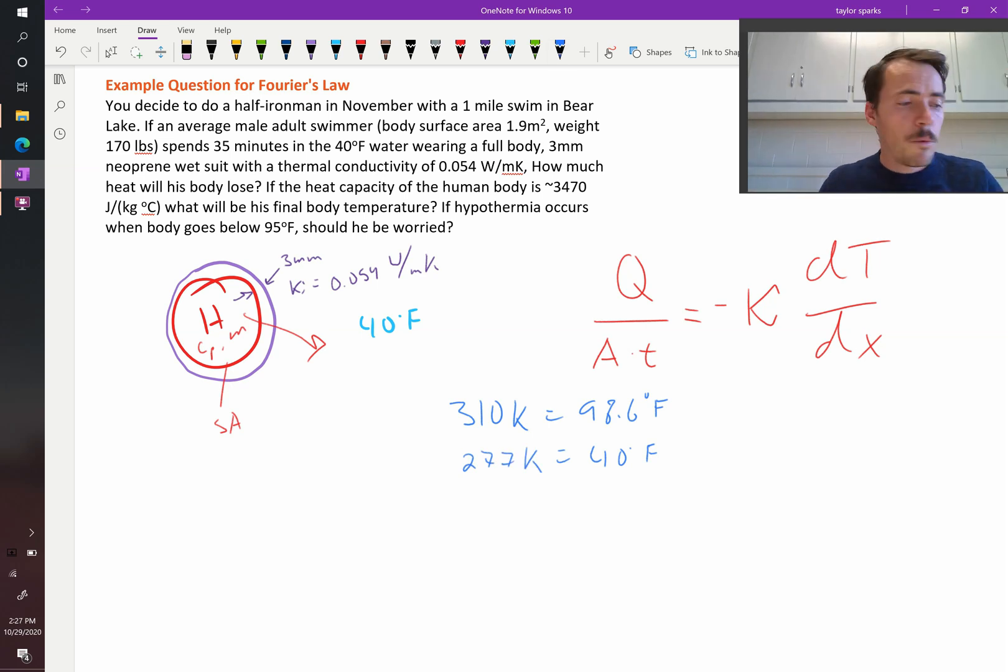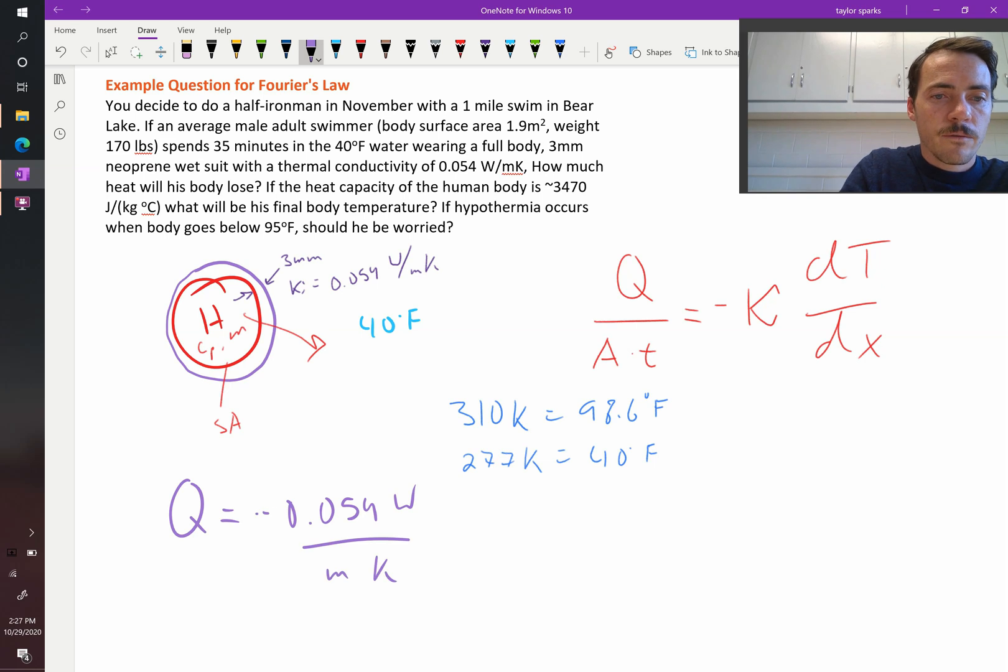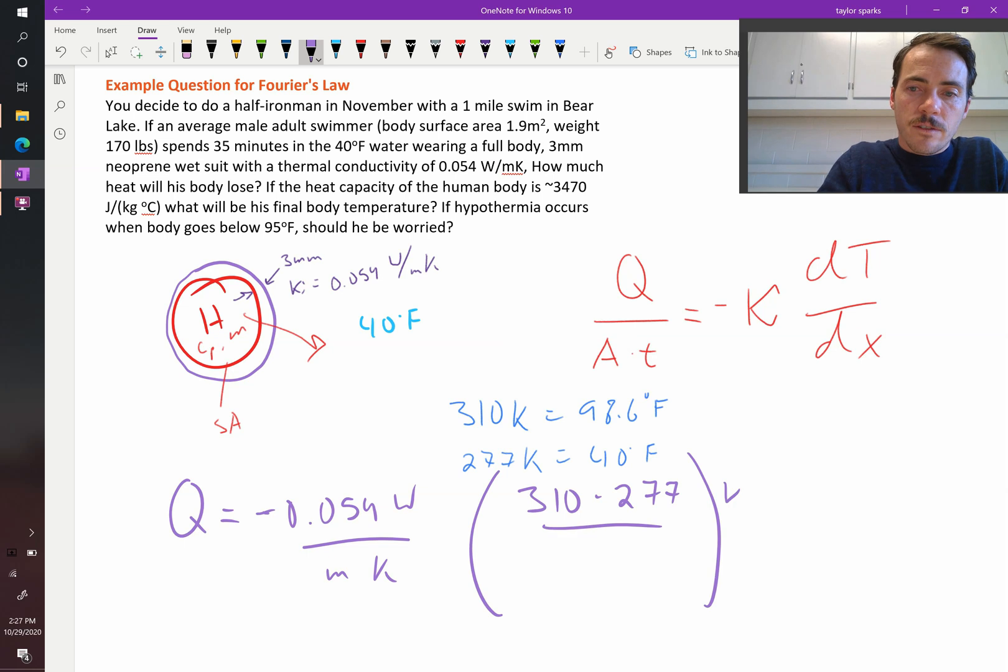Q, our heat flux is going to be equal to negative of our thermal conductivity. So that's negative 0.054 watts per meter Kelvin. That's going to be multiplied by our difference in temperature. So that's going to be 310 minus 277, 310 degrees minus 277 degrees. That's in Kelvin.